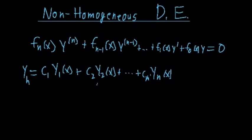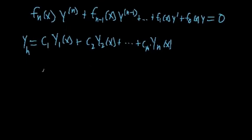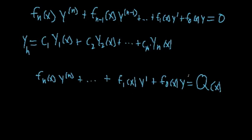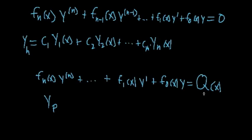Now let's talk about non-homogeneous differential equations. The same general form — f_n(x) times the nth derivative, all the way down to f_1(x) times the first derivative, plus f_0(x) times y — but now all of that equals some function q(x) instead of zero, where q(x) is any continuous function. If q(x) and all these coefficient functions are continuous, then we can find a particular solution y_p that satisfies this equation. When we plug in y_p, most terms cancel but we're left with q(x).